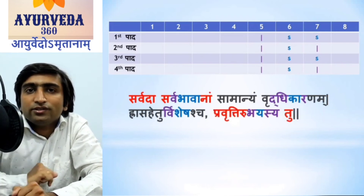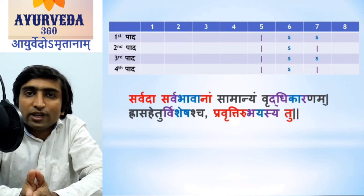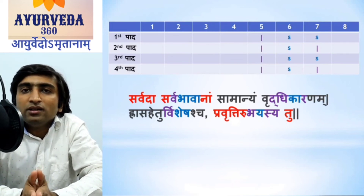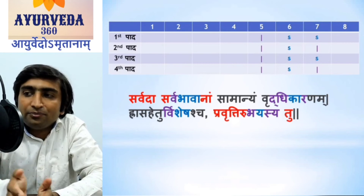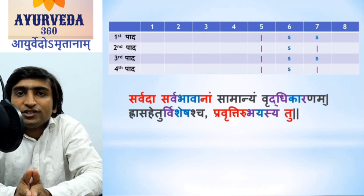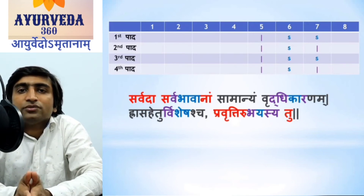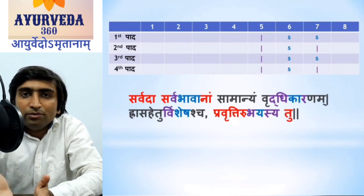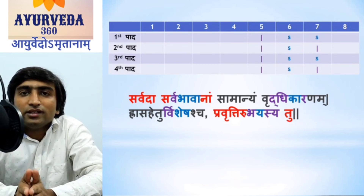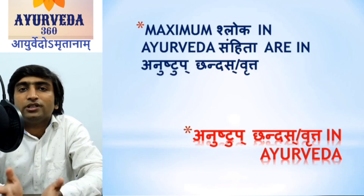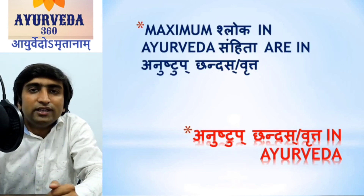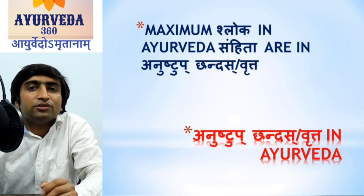The last example is from Charaka Samhita, the Sutrasthana first Adhyaya, and the Shloka is in relation to Samani Siddhanta. Again, apply the rule of Anustub Chandas — everything matches with the rules what I have mentioned. This Shloka can also be recited in one form or in another form. In this way it is very melodious to listen and also easy to learn.